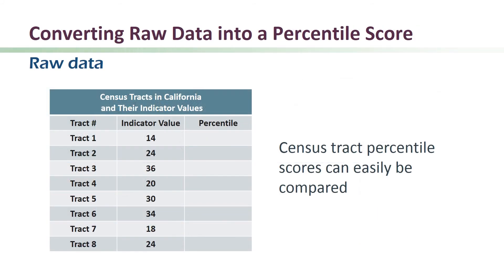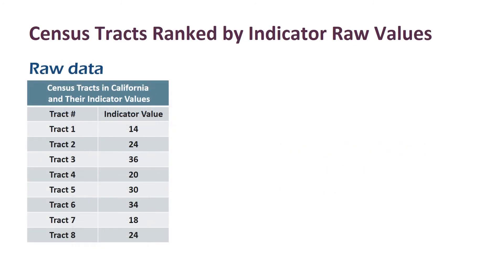In the previous module, you learned about the different types of raw data that are available for the various indicators. Once we have collected these, we convert the raw values into a percentile score. For any given census tract, the percentile score shows us how the raw values for this census tract compare to those for other census tracts across the state. To begin, we start with the raw values.